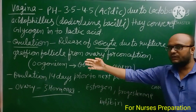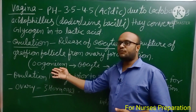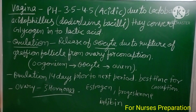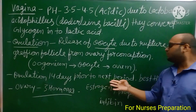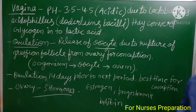Ovulation is the release of an oocyte due to rupture of the Graafian follicle from the ovary. The sequence to remember is: oogonium is formed first, oogonium converts into oocyte, and from oocyte the ovum is formed. Ovulation occurs 14 days prior to the next period — this is the best time for conception.